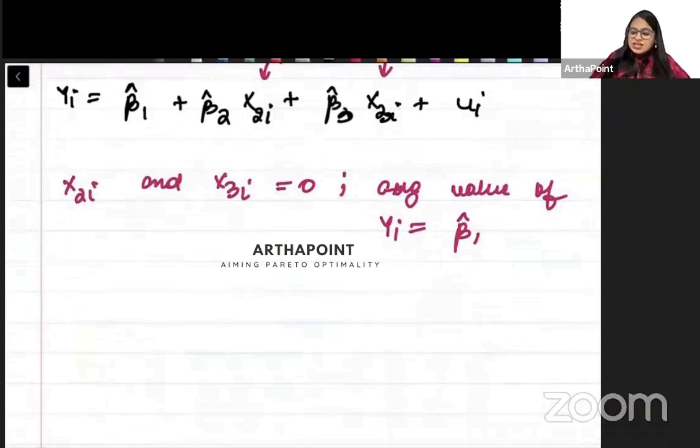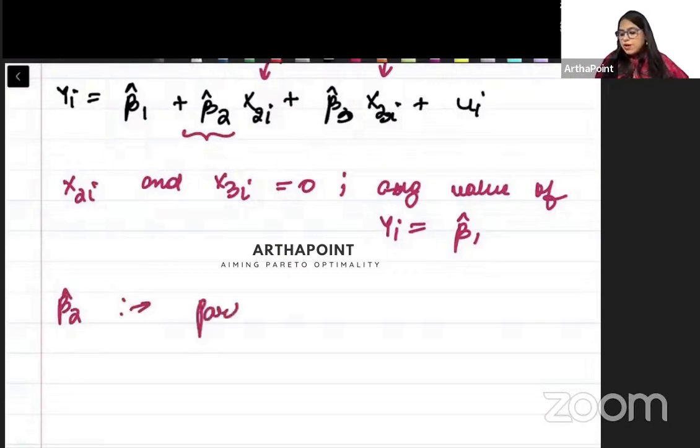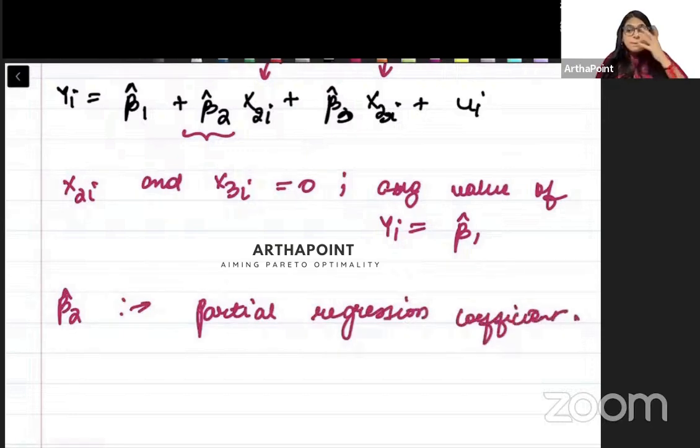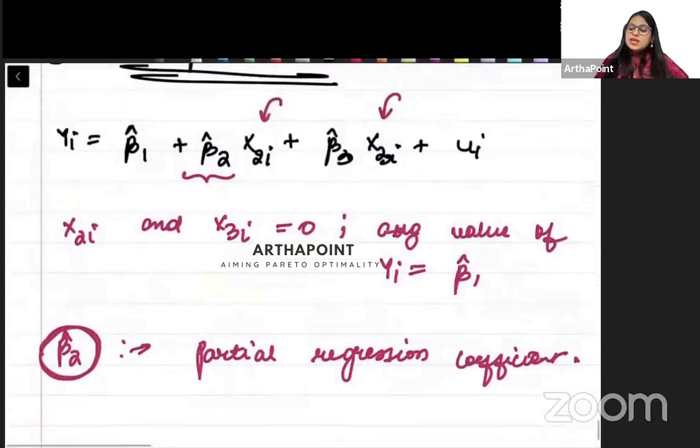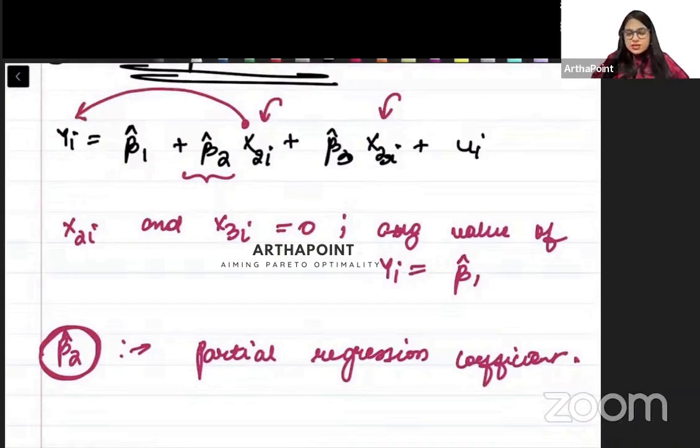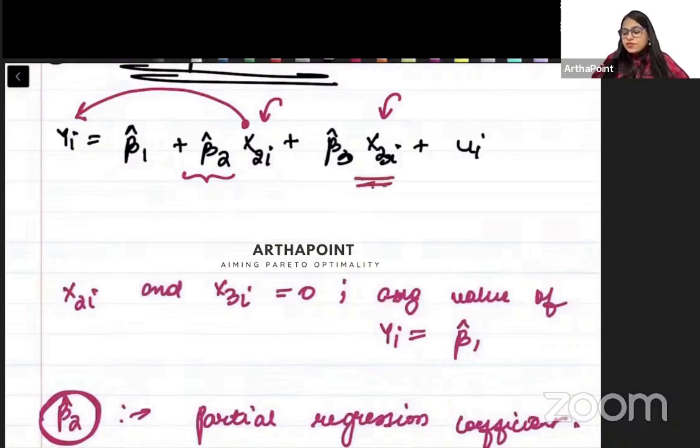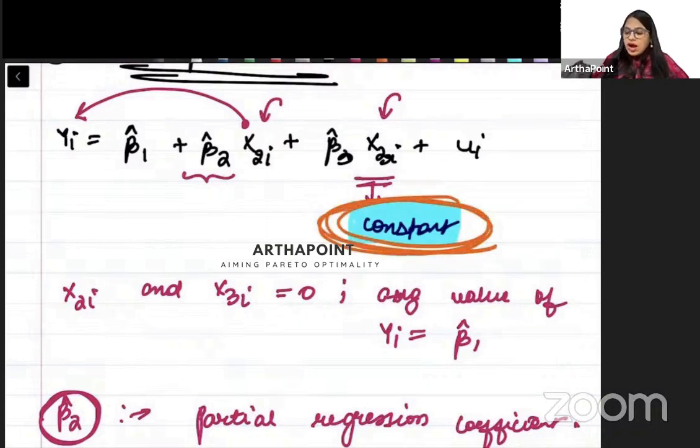Now, we want to understand how to interpret this. So beta 2 hat will be called a partial regression coefficient. It will be called as partial regression coefficient. Why partial? Because this beta 2 hat tells us how x2 impacts y, holding the effect of x3 constant. If I hold the effect of x3 constant, then how x2 will impact y, that's what it tells us.